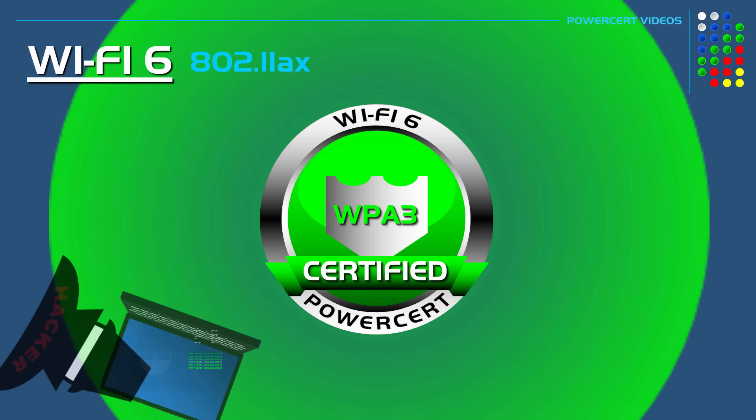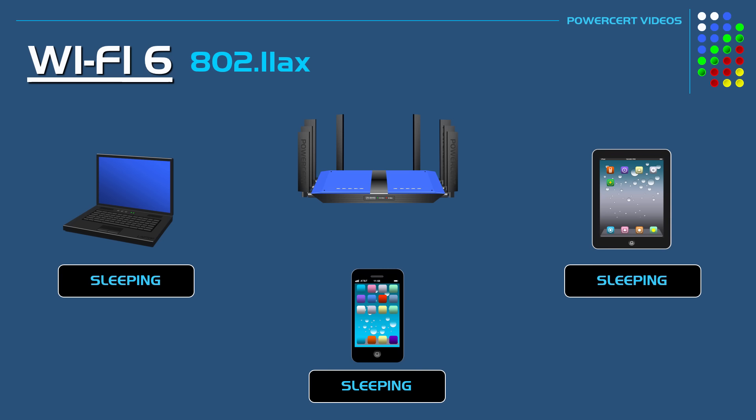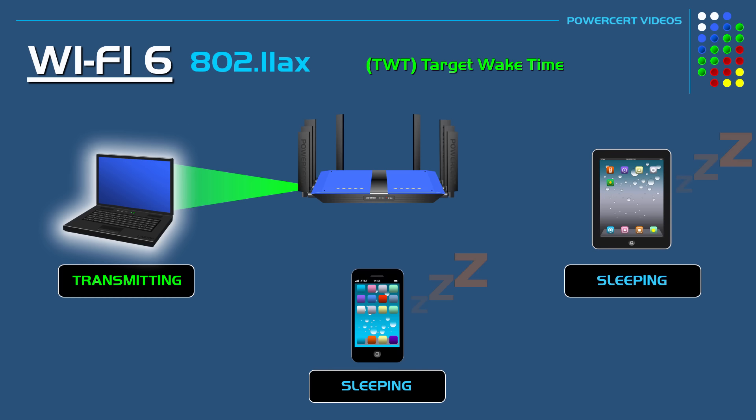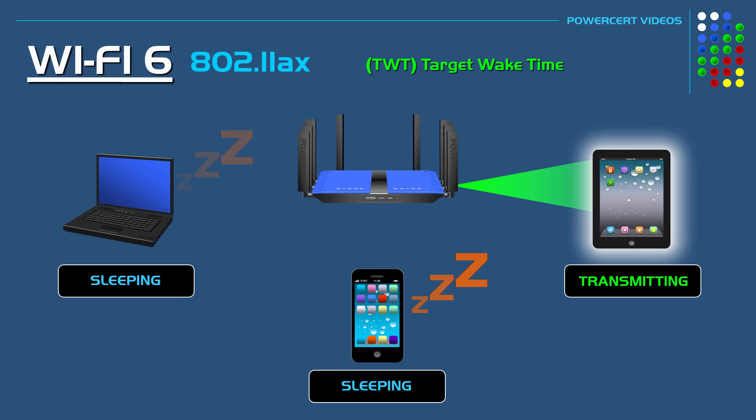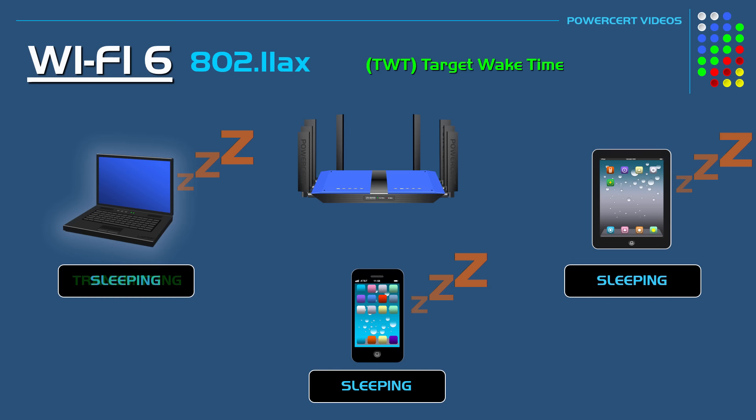Wi-Fi 6 also has the ability to extend battery life in Wi-Fi devices, and it does this by using a technology called target wake time. With target wake time, a router or access point schedules a time with Wi-Fi devices for when data is supposed to be sent or received. According to that scheduled time, when Wi-Fi devices are sending or receiving data their antennas are powered on. But when they are not sending or receiving data, they go into sleep mode and their antennas are powered off, which saves battery life.